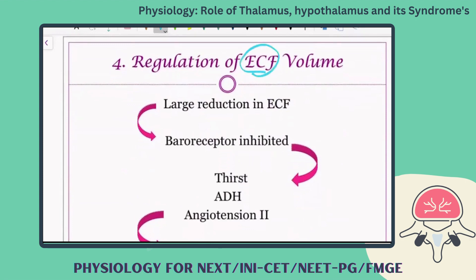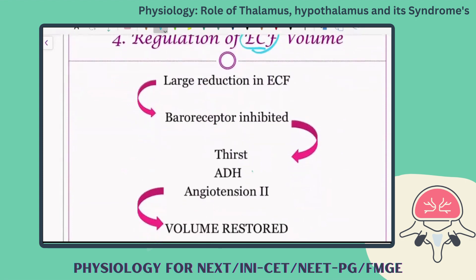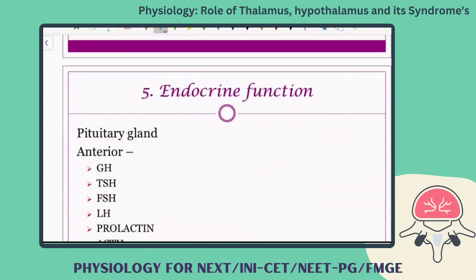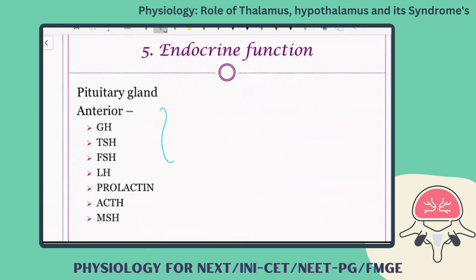Maintenance of extracellular fluid is achieved via angiotensin and antidiuretic hormone. The hypothalamus sends signals to the posterior pituitary and also interacts with angiotensin and the renal system to control water balance. All the examples we've seen across every system are controlled by the hypothalamus, making it the head control ganglion for endocrine functions.